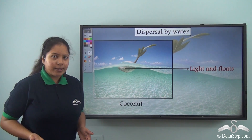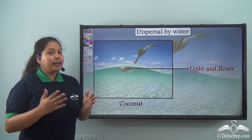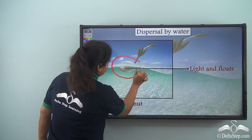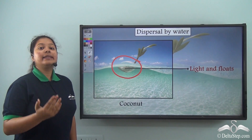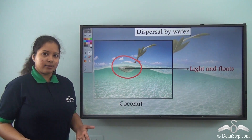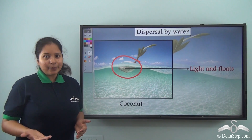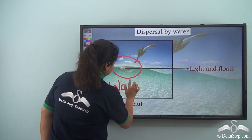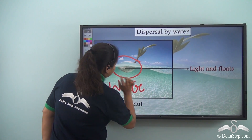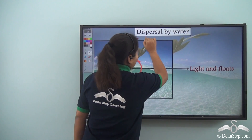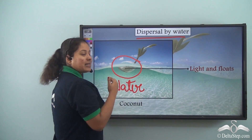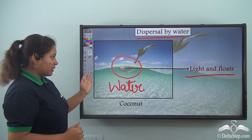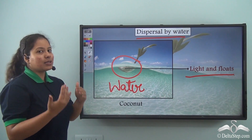Now if you see coconut trees, you can find a lot of them near the beach. Well, this is a coconut. Now it has to get dispersed from one place to another. So what do you think is the readily available mode for dispersal? Well, it is the water. A coconut gets dispersed by water because it is light and it can float on the water. So this is how the seed travels from one place to another.